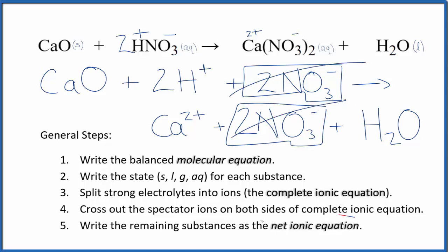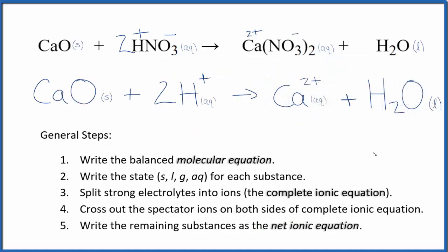What's left is the net ionic equation for CaO plus HNO3. I'll clean this up. We'll write the states in and have our net ionic equation. So this is the balanced net ionic equation for CaO plus HNO3. You'll note the atoms are the same on both sides. They're balanced, and charge is balanced. We have two times 1+, that's 2+ in the reactants. In the products, we have the 2+ on the calcium ion.